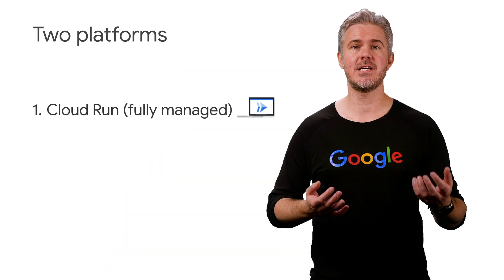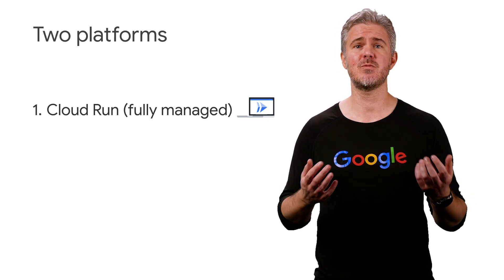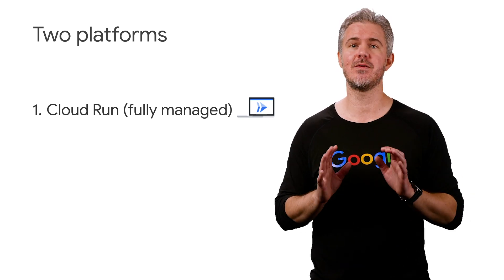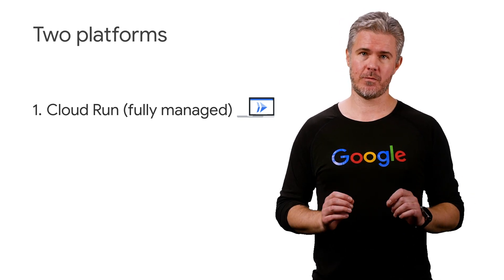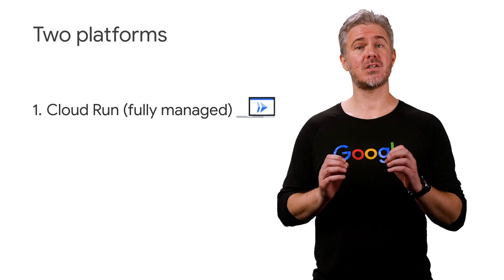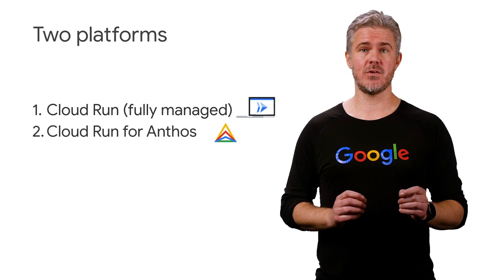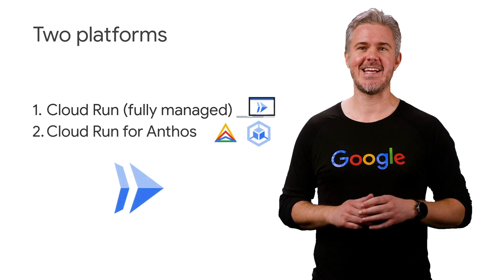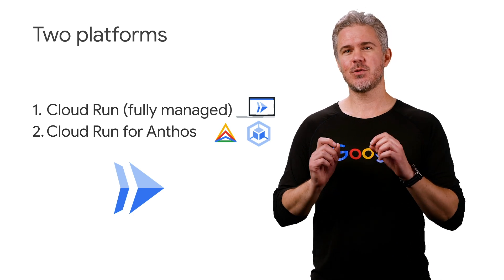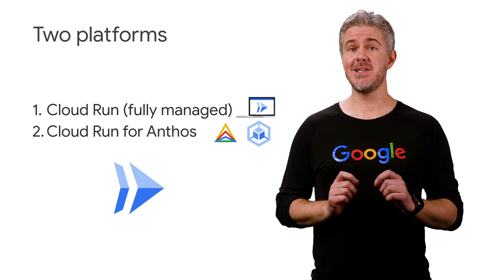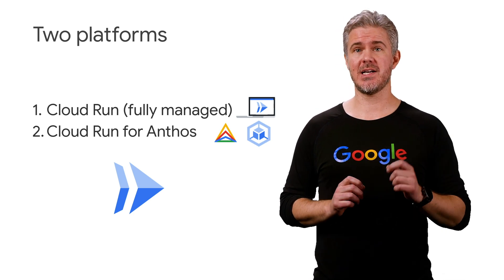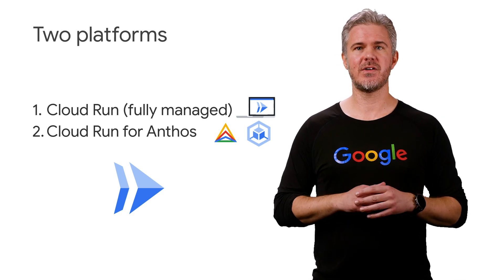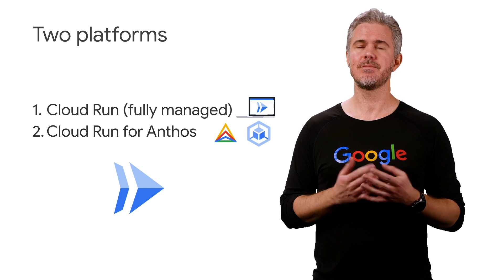Cloud Run has two platforms: the fully managed platform that handles basically all the infrastructure for you, and another platform called Cloud Run for Anthos that runs on Google Kubernetes Engine, or GKE. Since we can attach GPUs to the Kubernetes clusters and tweak a whole bunch of other hardware settings, this likely would solve the problem.